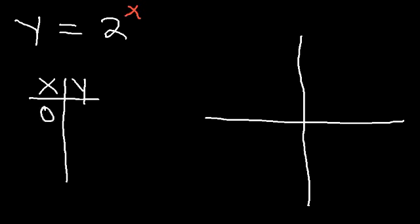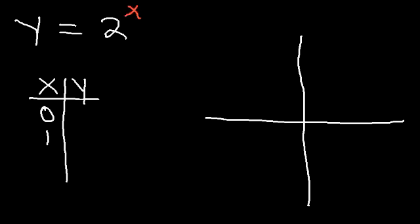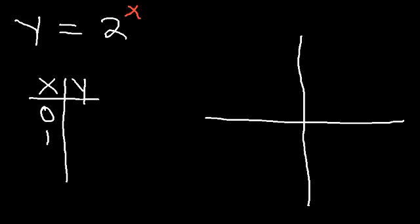Personally, I would pick 0 and 1. Now, this function has a horizontal asymptote. The horizontal asymptote is the x-axis — it's y equals 0. Now, if you see a number like plus 3, the horizontal asymptote will shift 3 units up, so it's now y equals 3. So if the function was 2 to the x minus 4, the horizontal asymptote is y equals negative 4. But if you don't see that number, then it's y equals 0 — it's the x-axis.